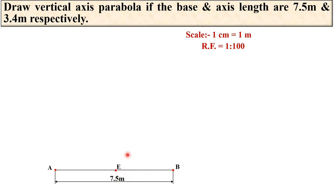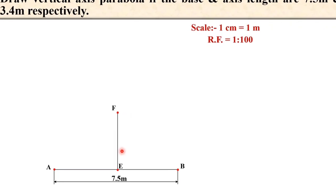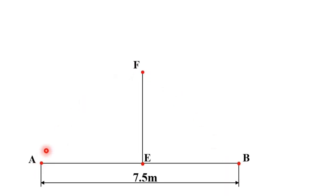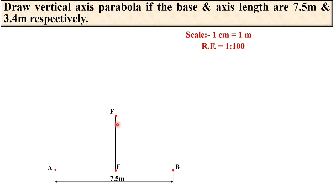Mark the midpoint of line AB. Now draw a vertical line passing through this midpoint E. The axis length is exactly 3.4 meters. Set it as 3.4 centimeters on your drawing page due to the scale. Mark the point and give the name F. Also mention the dimension as 3.4 meters in your drawing.